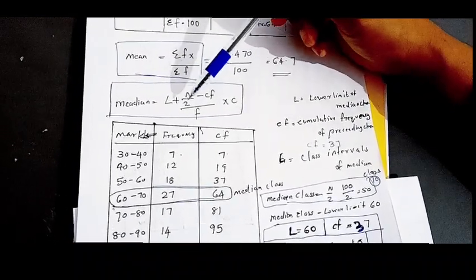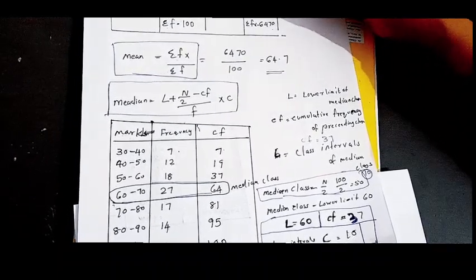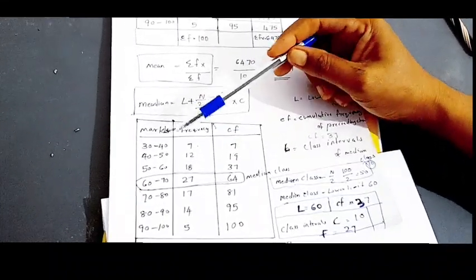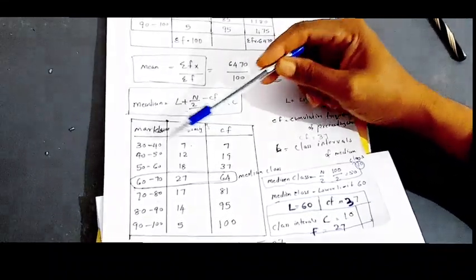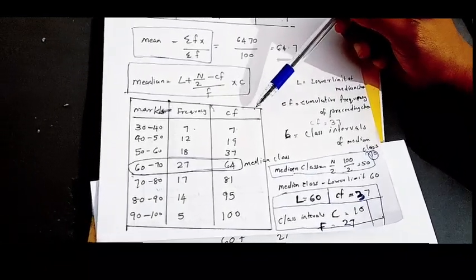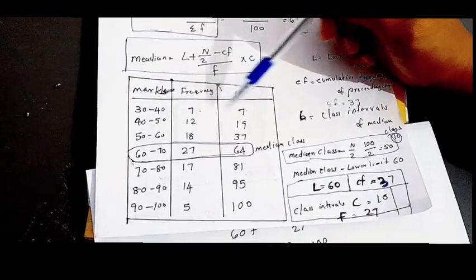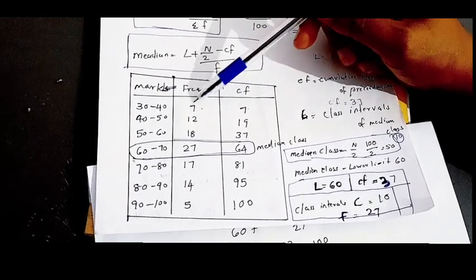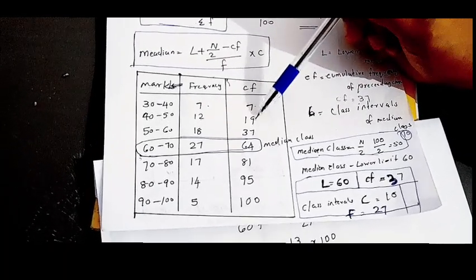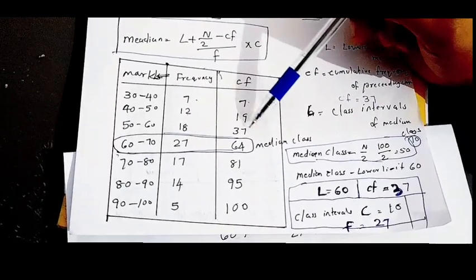The median equation is L plus n by 2 minus cf by f into c. You can add the frequency in the upper class — this means cf, that is the cumulative frequency. Looking at the cumulative frequency, this minus cf is 7.